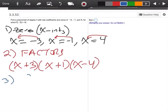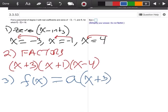So number three, we're going to start to write out our function. f of x equals, remember, we're going to have to have some kind of a coefficient. We're going to have x plus 3, x plus 1, and x minus 4.